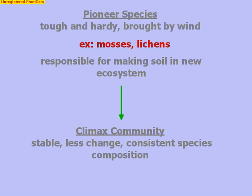A predictable sequence of events follows, from pioneer species all the way to what's called the climax community. The climax community is stable, experiences less change, and has a consistent species composition.